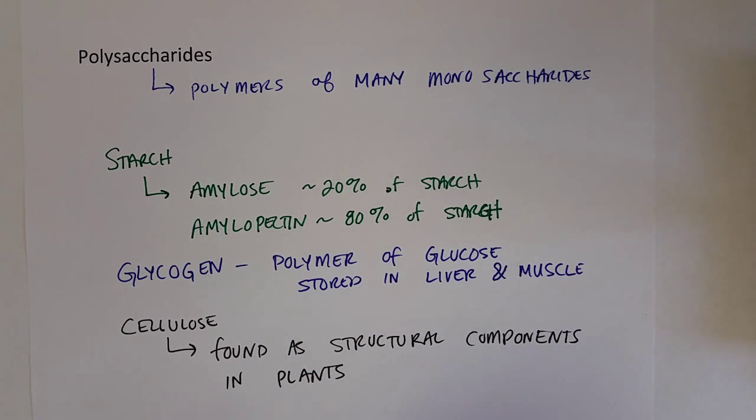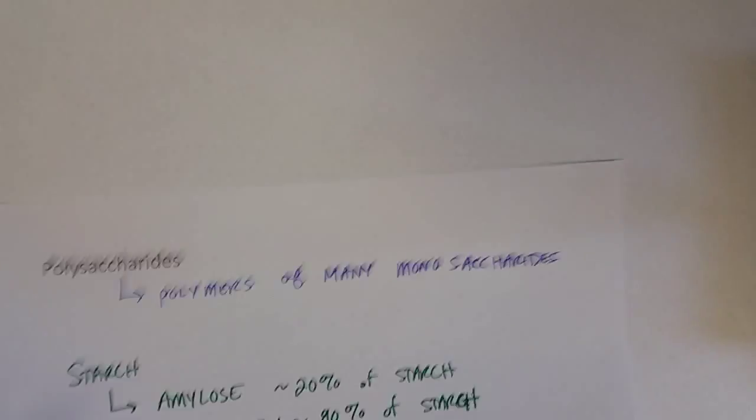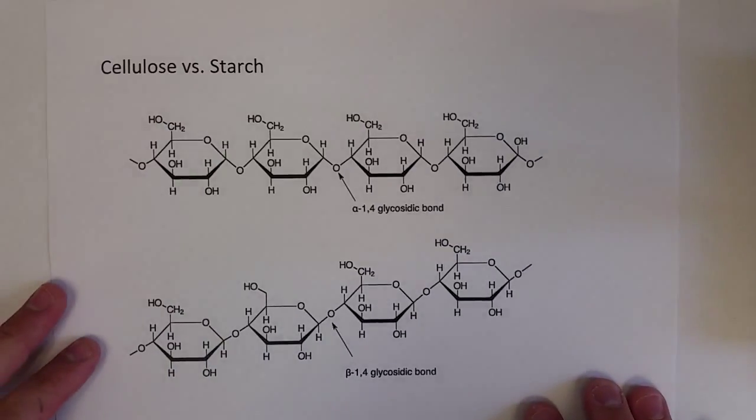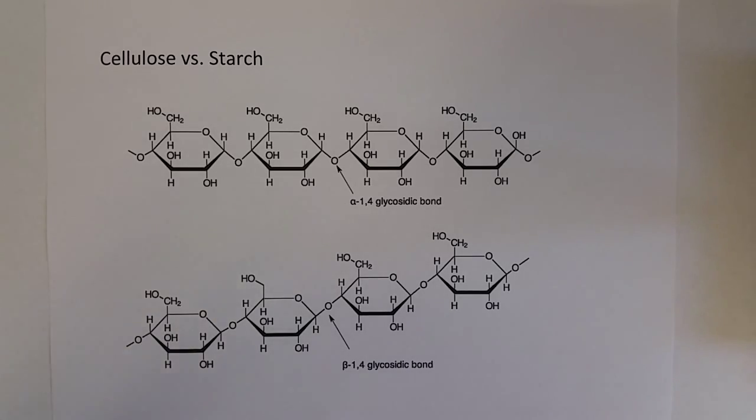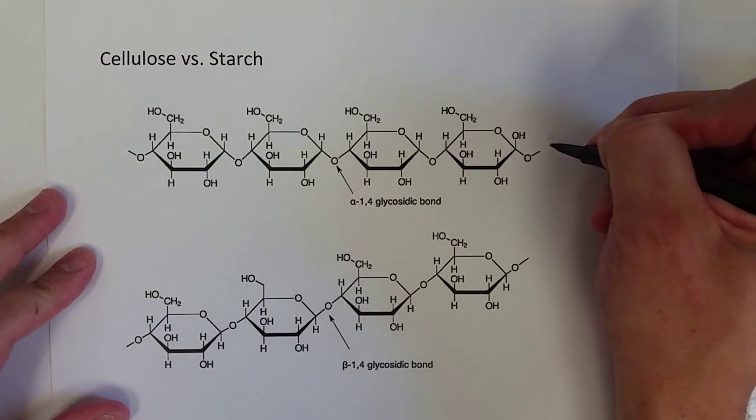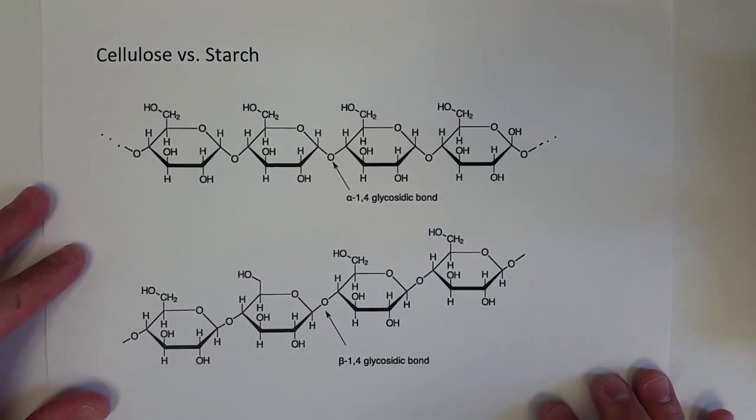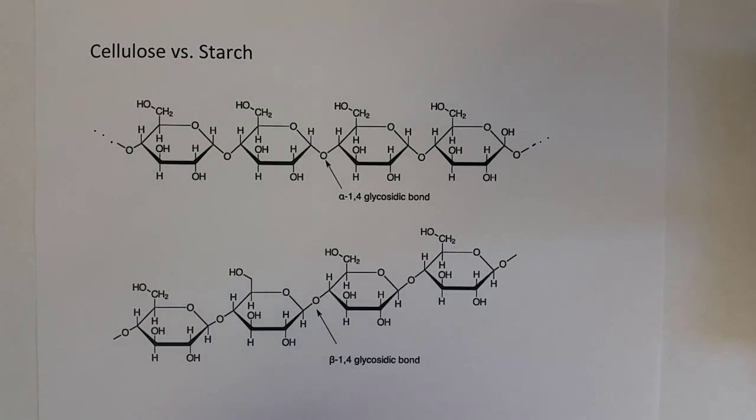Let's take a closer look at cellulose and starch and see what the big difference is. Here is a quick cutout of a cellulose and starch molecule. These polymers would continue on either end to connect with more glucose monosaccharides. The big difference between these two is the linkages.